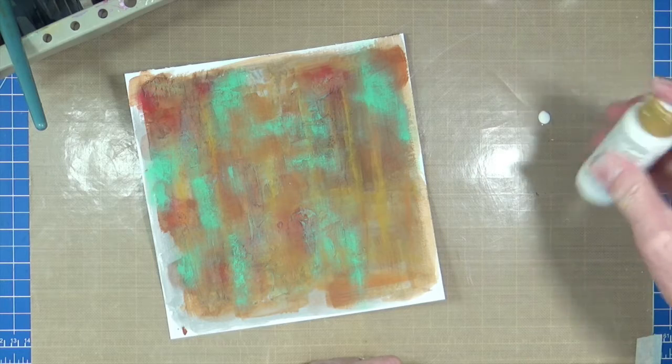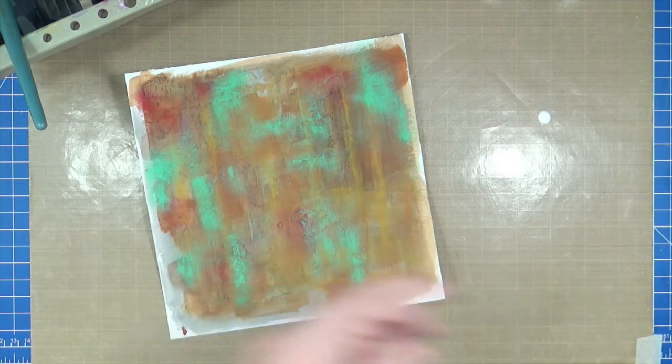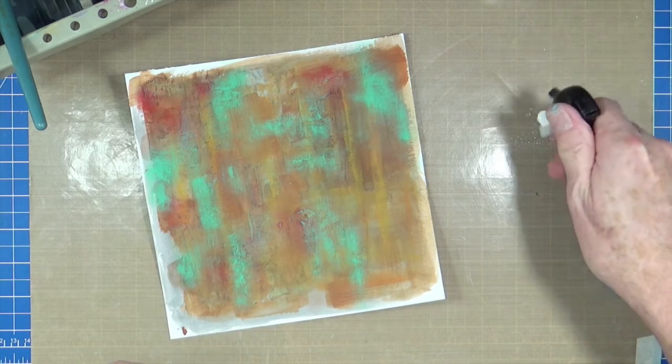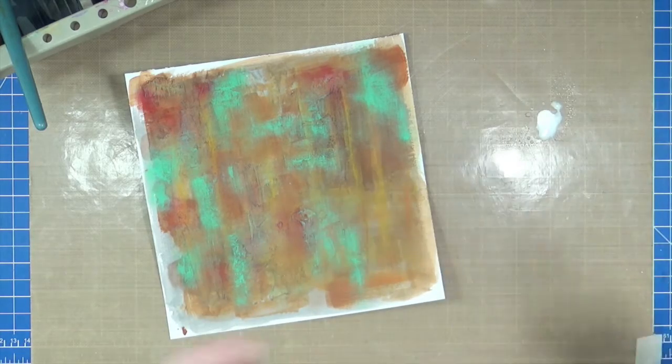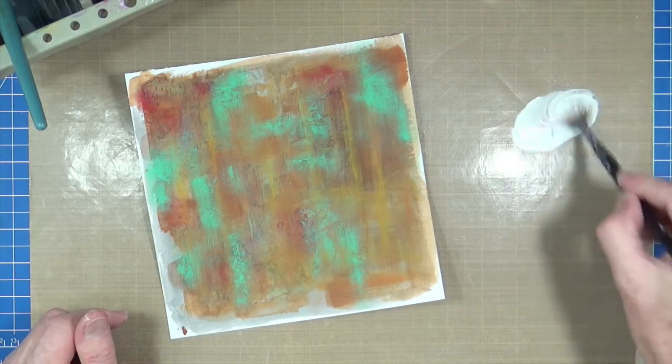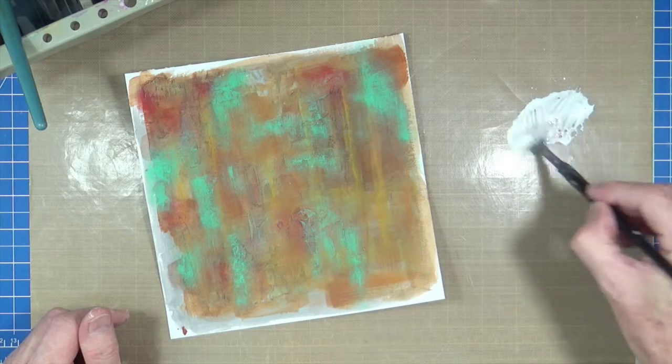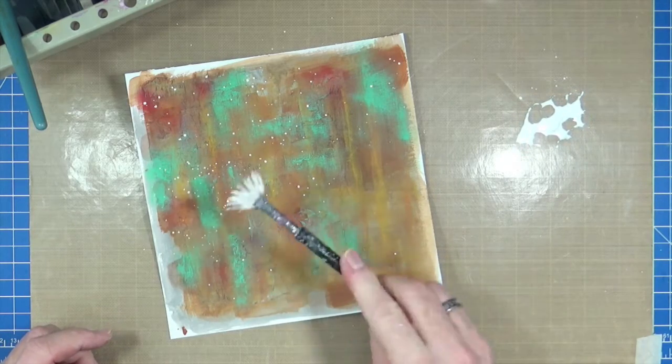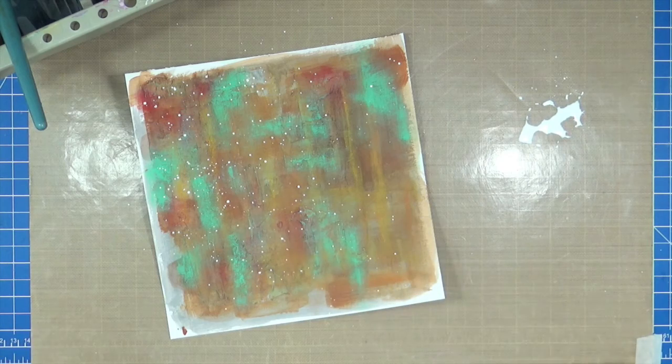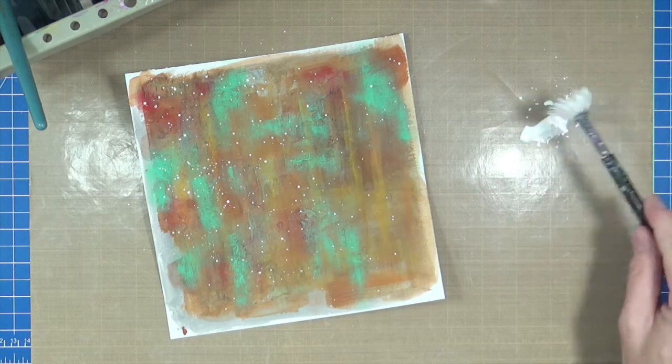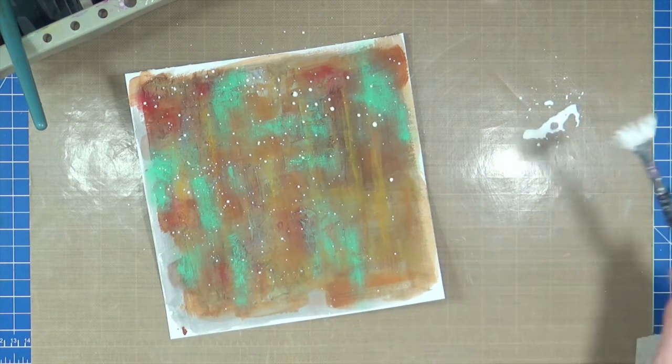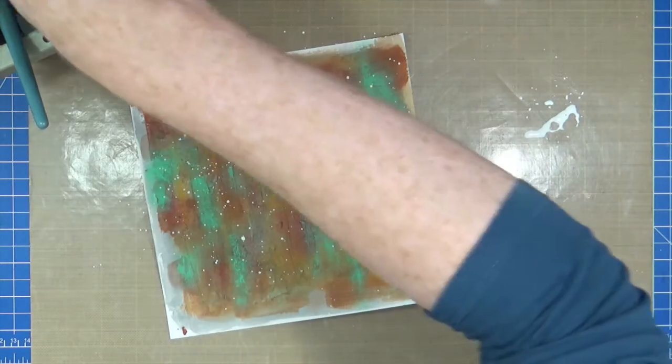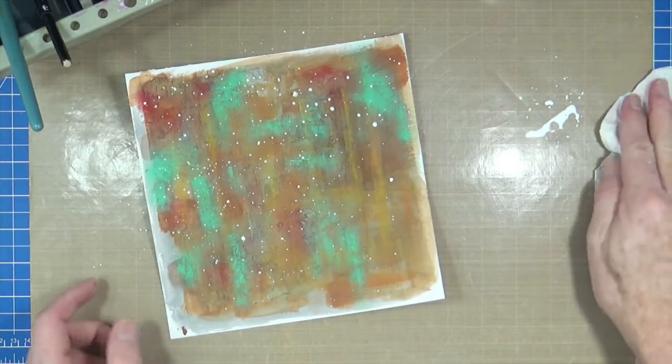So. Now what I want to do. Is just add a little bit more interest. Into the page. So. Yes. I've got the fan brush. I've got some white paint. And I've got a bit of water. So. We're just going to add a few. Splatters. That'll do. That's the white.